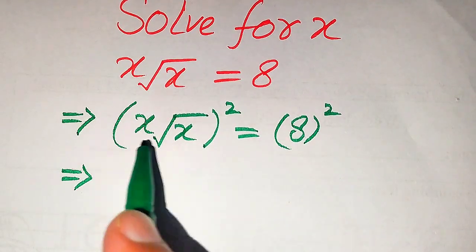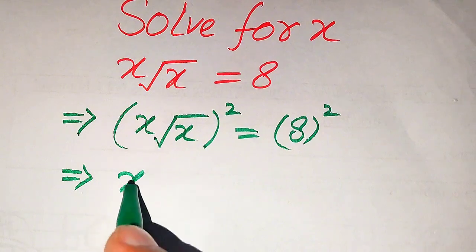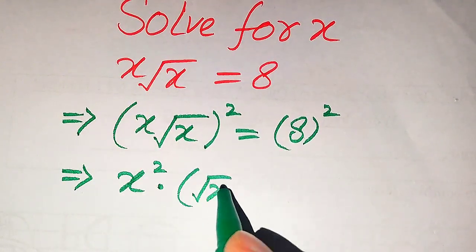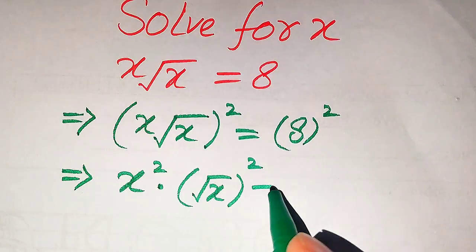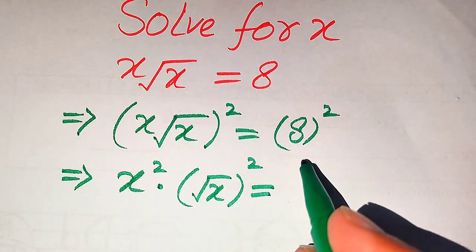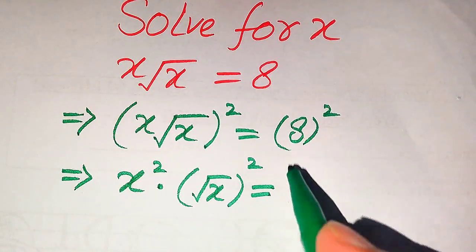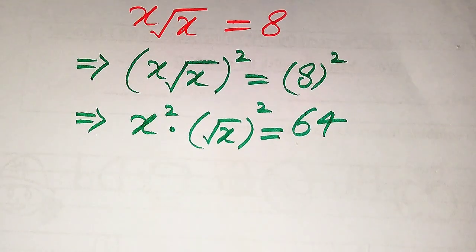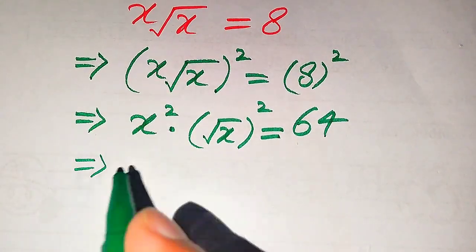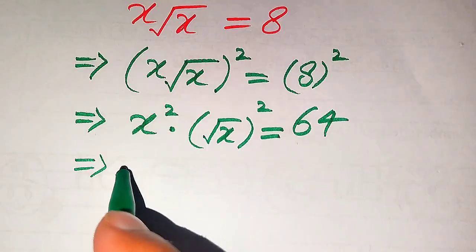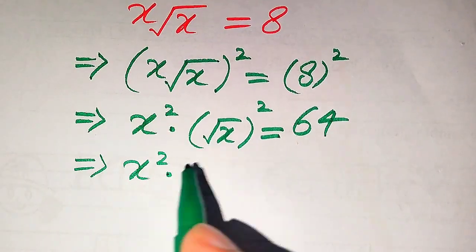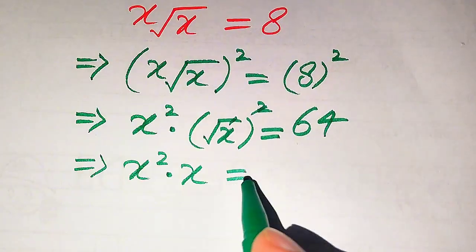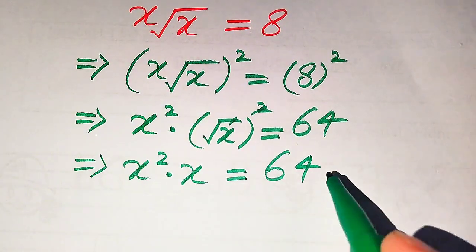We need to use the square identity on both of these terms. It will be written as x squared multiplied by square root of x, whole squared, is equals to 8 squared, and 8 squared becomes 64. Further, we need a little bit more simplification — it becomes x squared, and the square and square root cancel, giving us x, so x squared times x is equals to 64.